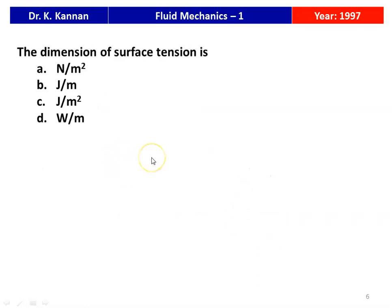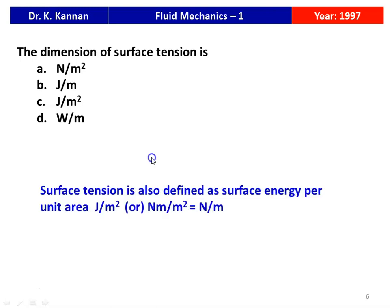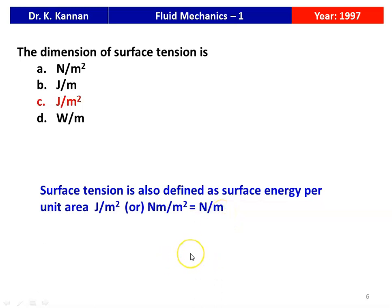Next question from the 1997 question paper: the dimension of surface tension — options are Newton per meter squared, Joules per meter, Joules per meter squared, or Watts per meter. Surface tension is also defined as surface energy per unit area, i.e., Joules per meter squared. Since Joules = Newton·meter, dividing by meter squared gives Newton per meter, which matches. The correct answer is Joules per meter squared.